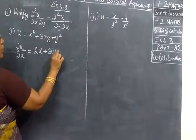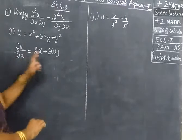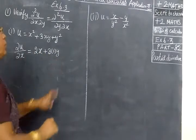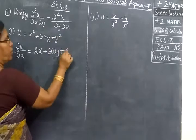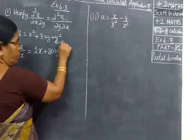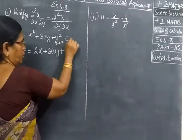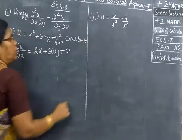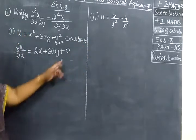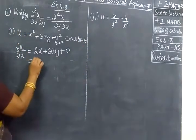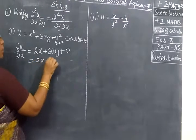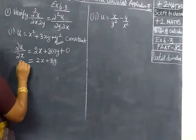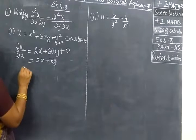We treat y as a constant, so the y² term gives 0 because it is treated as constant. So ∂u/∂x equals 2x plus 3y.